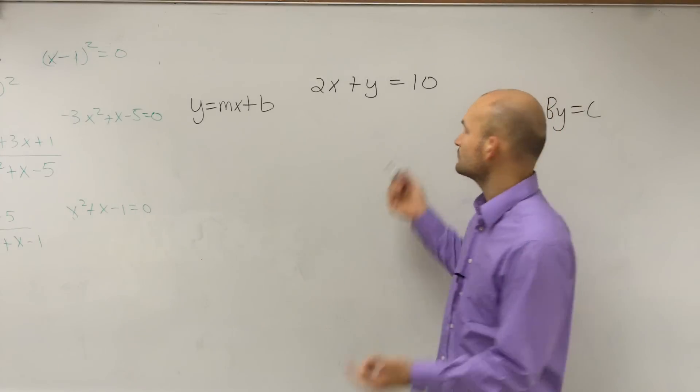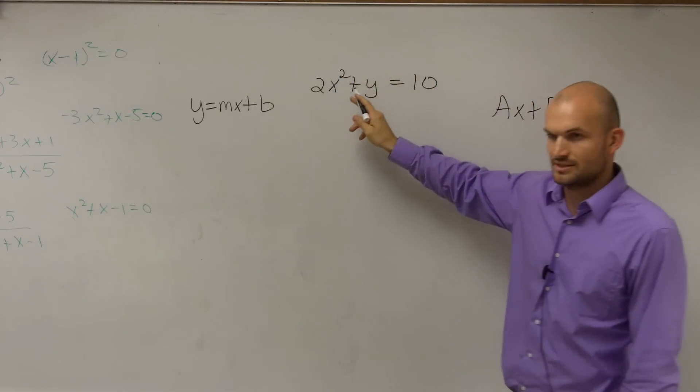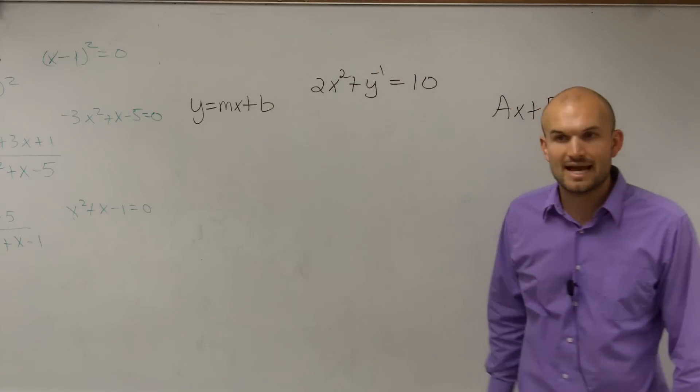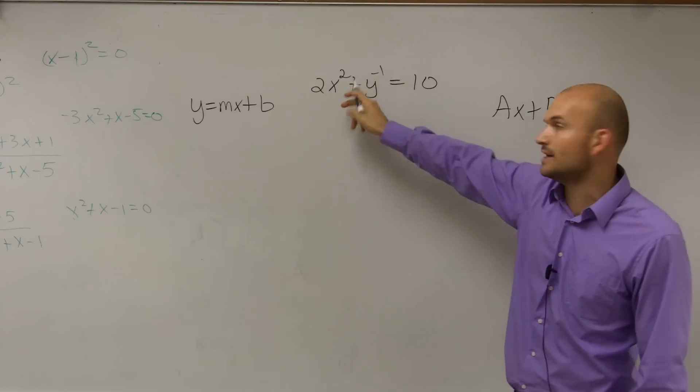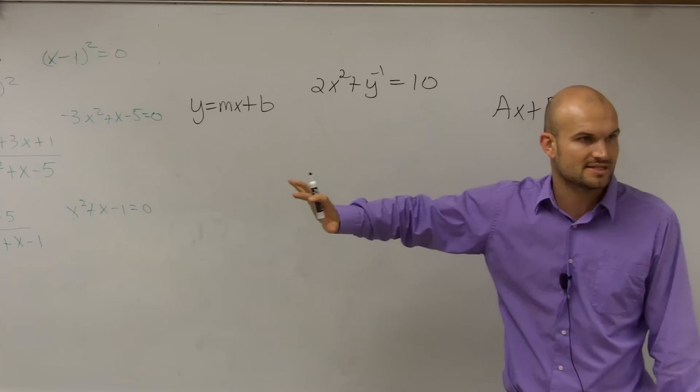Say if that was 3y, it wouldn't have been a linear equation? No. As long as the exponent, if your exponent is anything other than 1, even negative 1, as long as your exponents are different than 1, you do not have a linear relation. Any time you see an exponent that's different than 1.